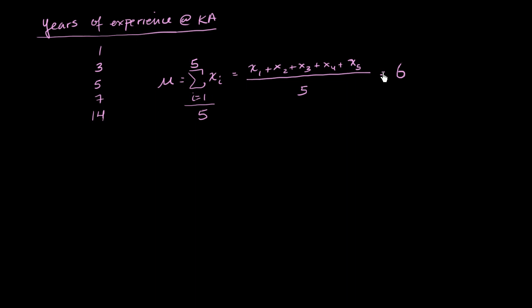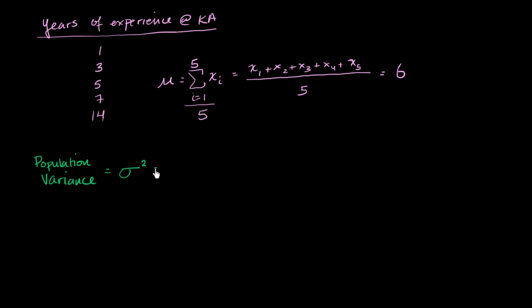Now I want to get some measure of how much spread there is around that mean — how much do the data points vary around it? Instead of giving someone all the data points, I want a parameter that represents how much these things, on average, are varying from the mean. I'll call that the variance. The population variance is denoted with lowercase sigma squared. I'm going to take the distance from each point to the mean, square it to get a positive value, and divide by the number of data points — essentially finding the average squared distance.